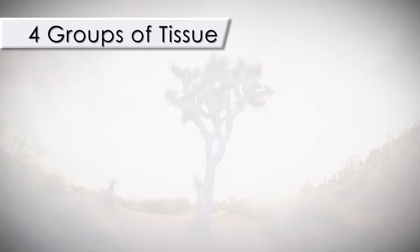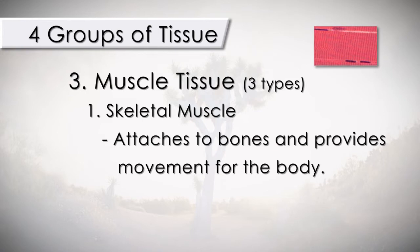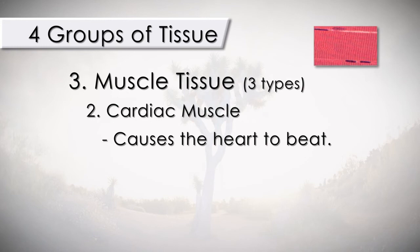The third main group of tissues are the muscles. There are three main types of muscles. One: the skeletal — skeletal muscles attach to the bones and provide movement for the body. Two: cardiac muscles, which cause the heart to beat. And third: the visceral or smooth muscles, which are present in the walls of many organs such as the esophagus, stomach, intestine, fallopian tubes, and blood vessels.